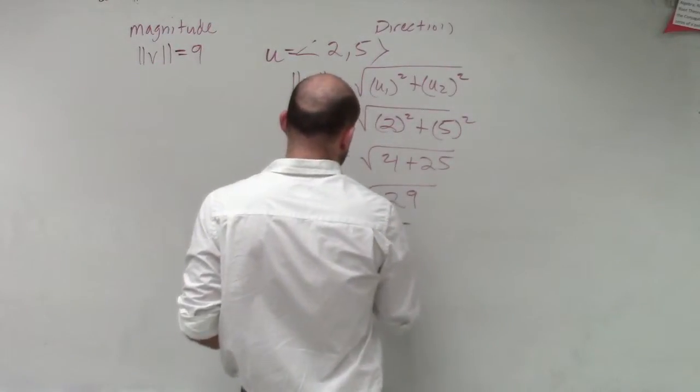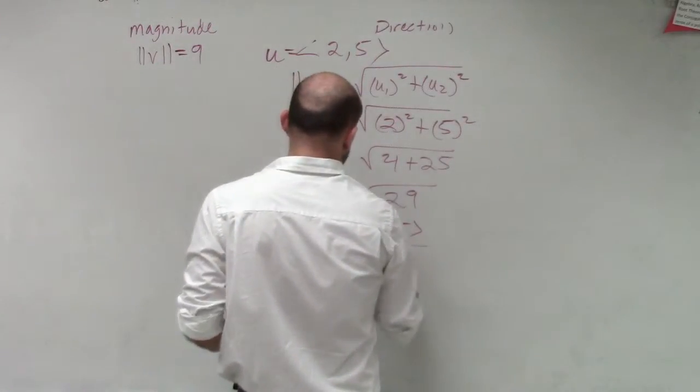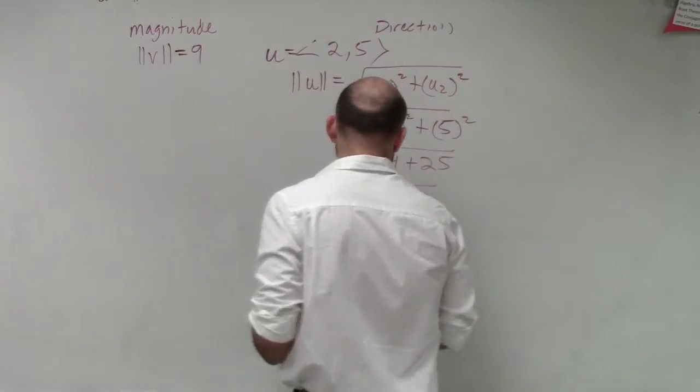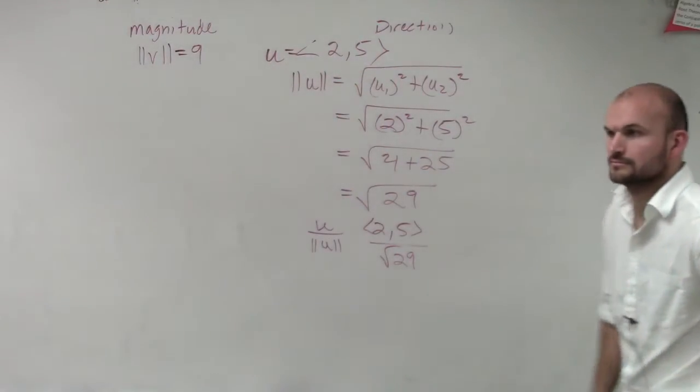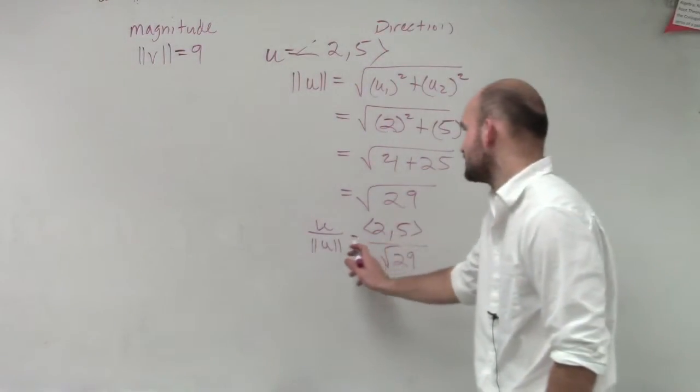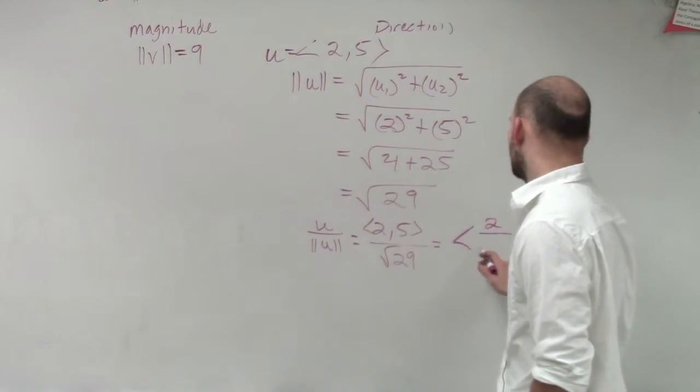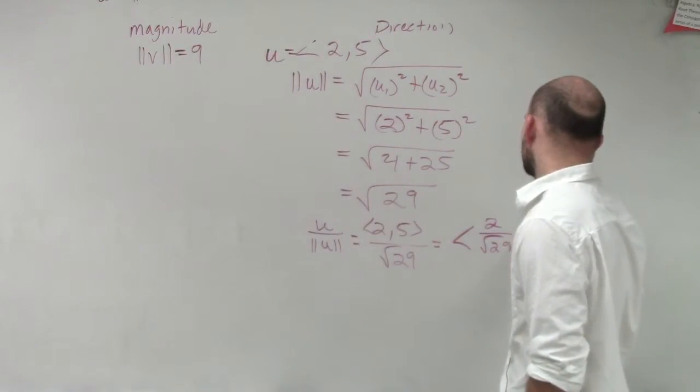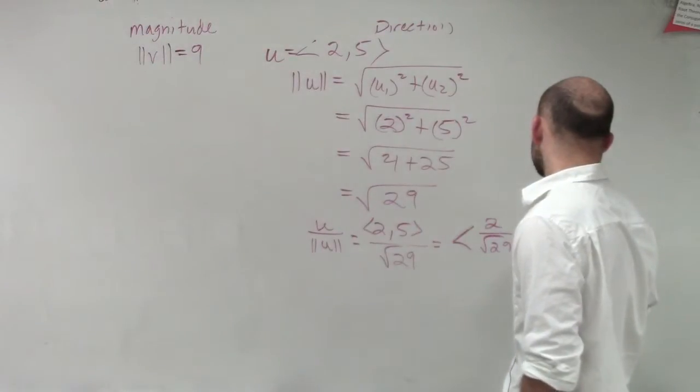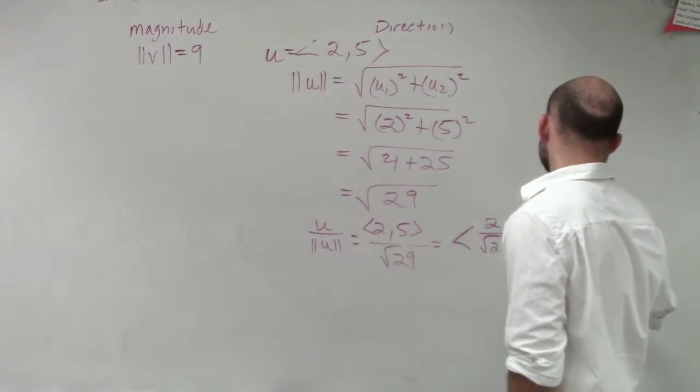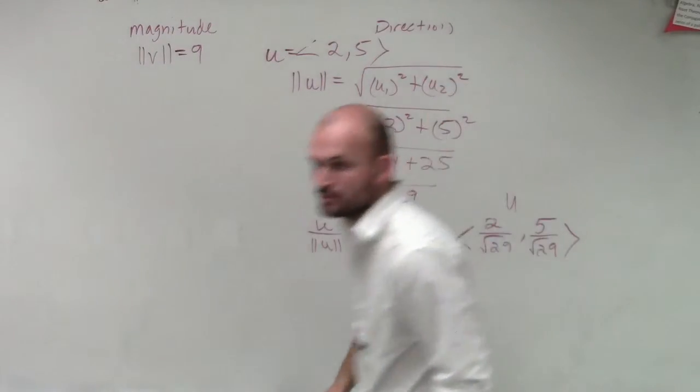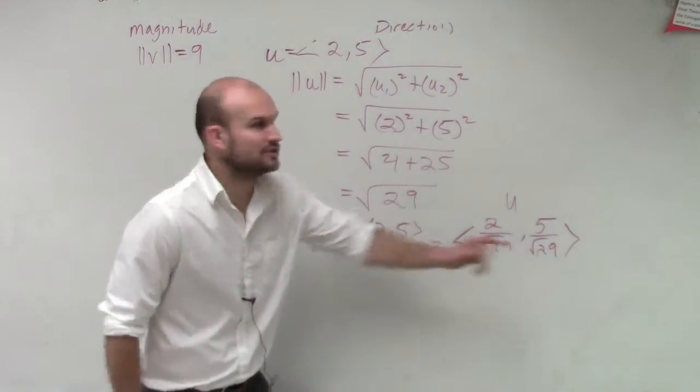So I have (2, 5) over √29, which we can break into a vector as (2/√29, 5/√29). That is now my unit vector u.